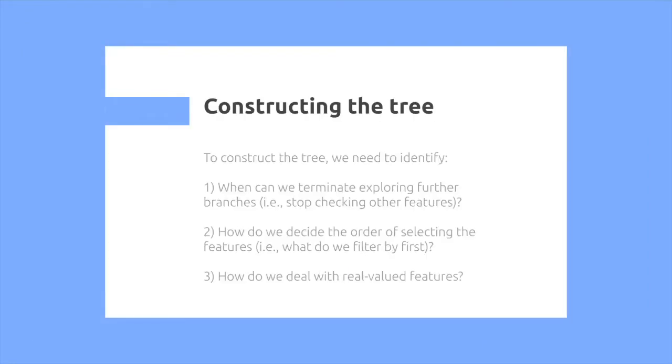So to construct the tree, we need to identify the following. Here are three different problems that we need to solve. How can we determine when we need to terminate exploring further branches so we stop checking other features? How do we decide the order of selecting the features? So what do we filter on by first? And also, how do we deal with any real value features? What happens if we're looking at, say, a feature's grade point average?